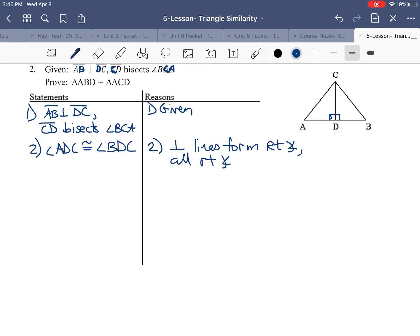All right angles are congruent. All right, they tell us that CD bisects BCA, so that means that these two guys are congruent. So, angle ACD is going to be congruent to BCD, and that's going to be a bisector forms congruent angles.